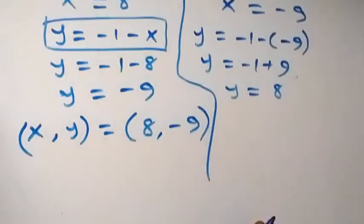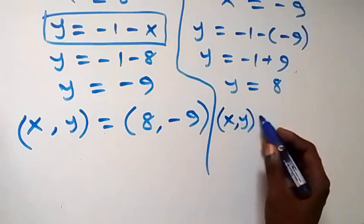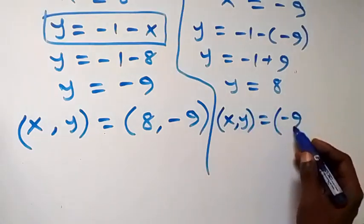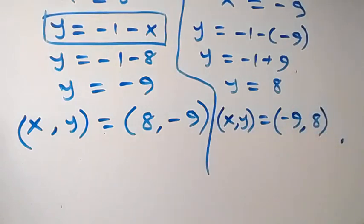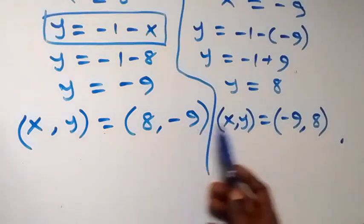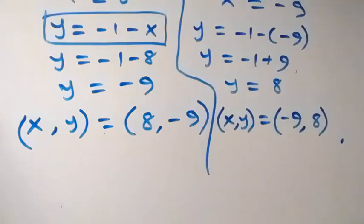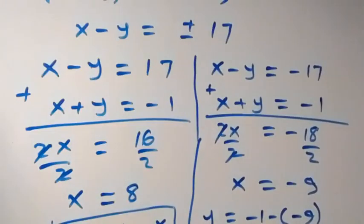The second set of solutions gives (x, y) = (−9, 8). So these are the two sets of solutions. Notice the value of x in the first solution equals the value of y in the second, and vice versa. Thank you for joining us — don't forget to subscribe for more videos, turn on the notification bell, leave a comment, give a thumbs up, and share. See you next class!